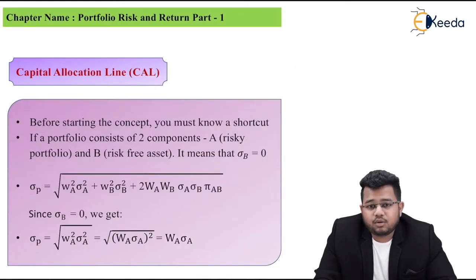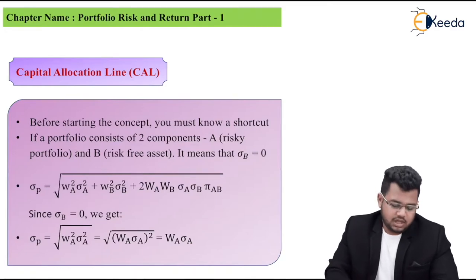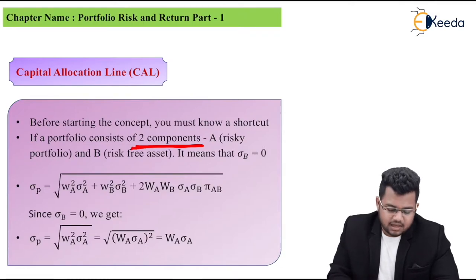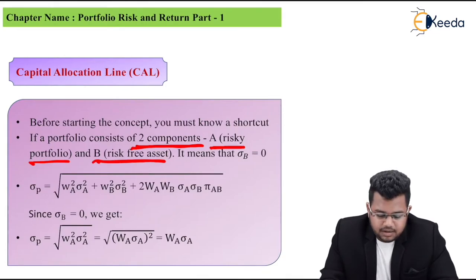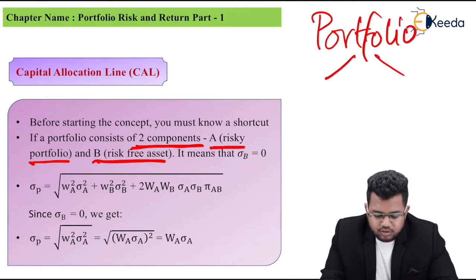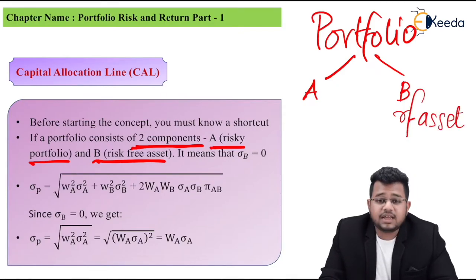Now, let's study about capital allocation line, which is the second part of our discussion. Before starting the concept, you must know a shortcut. If a portfolio consists of two components - A, a risky portfolio, and B, a risk free asset - it means sigma B will be zero.